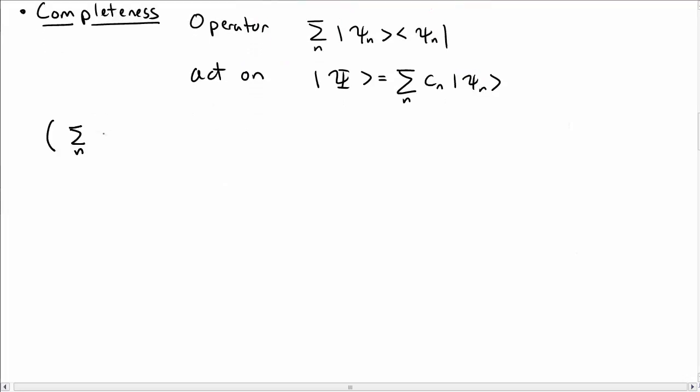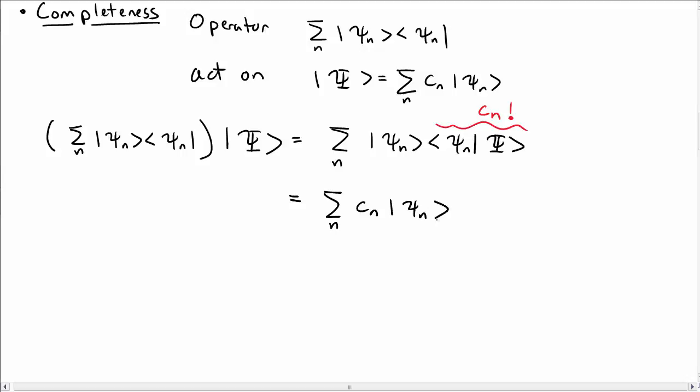Well, if I take this operator here and operate it on capital psi, so now let me write out or pass through capital psi into the sum here. And so I have an inner product between psi n and capital psi, but that inner product just gives me the coefficient cn. And so then I have sum over n, cn psi n. Oh, but that is just what I mean by the state psi.